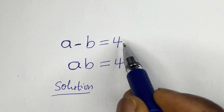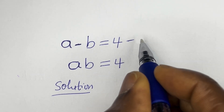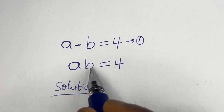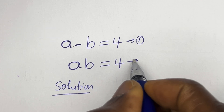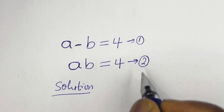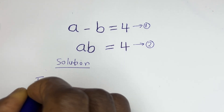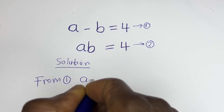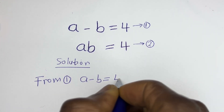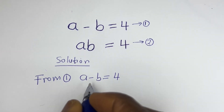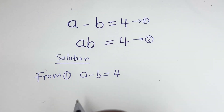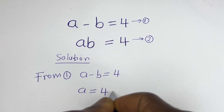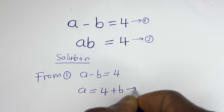a minus b is equal to 4 — let's call this equation 1. Then a b is equal to 4 — let's call this equation 2. From equation 1, let's make a the subject of the formula: a is equal to 4 plus b. Let's call this equation 3.